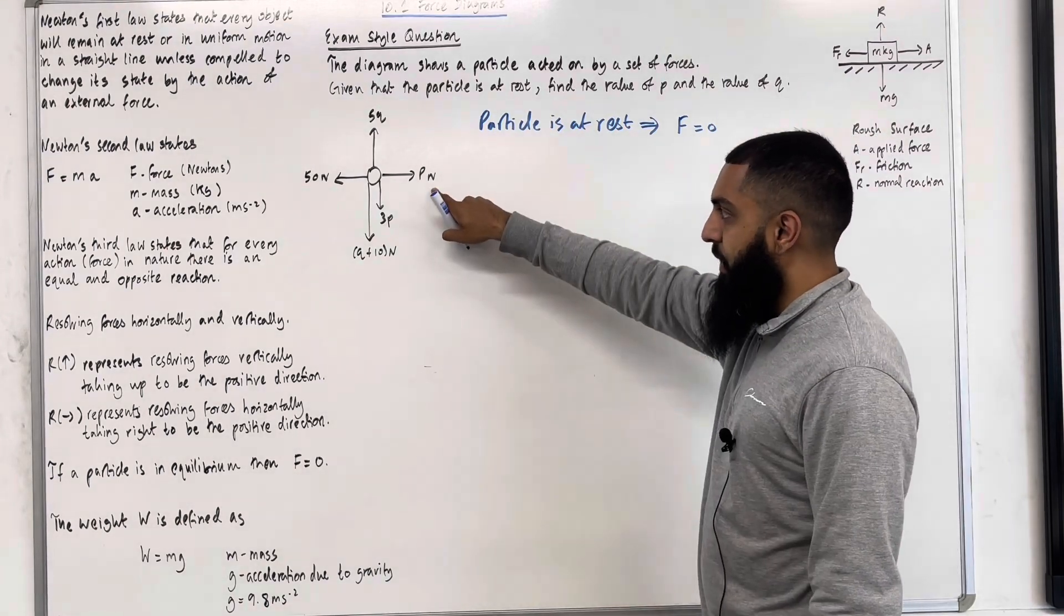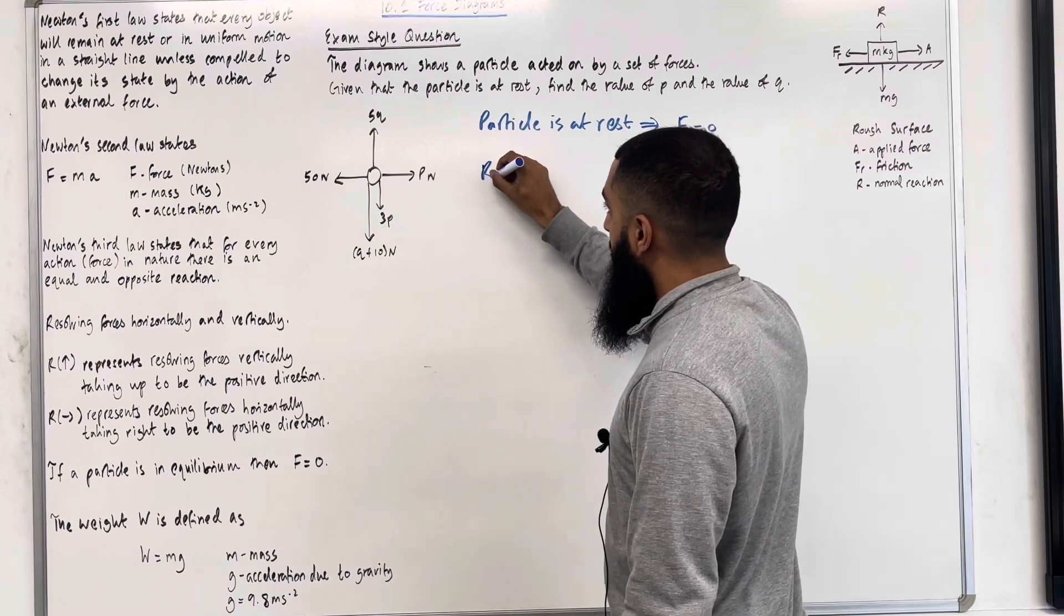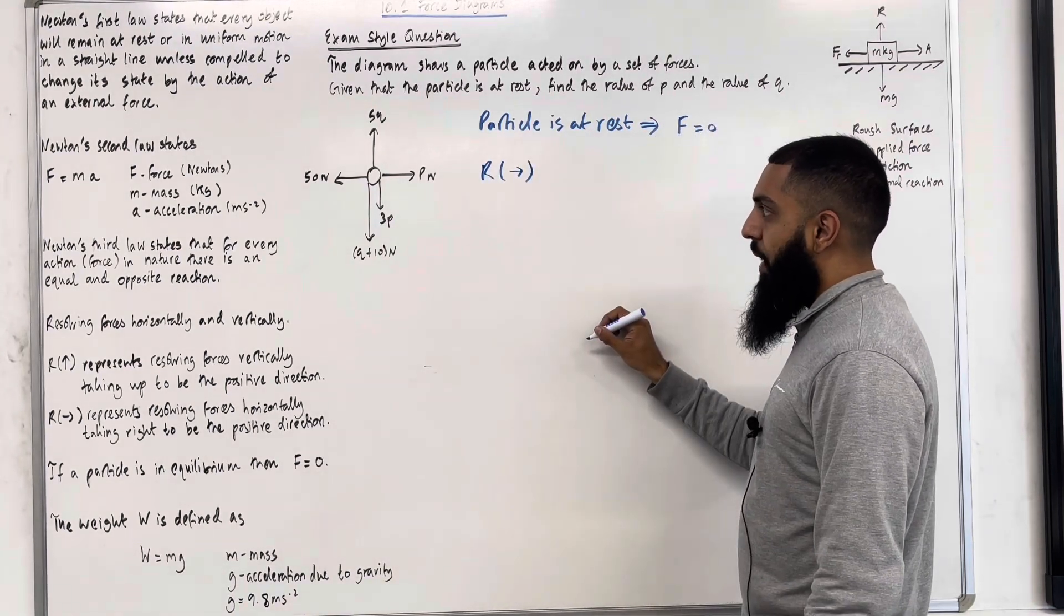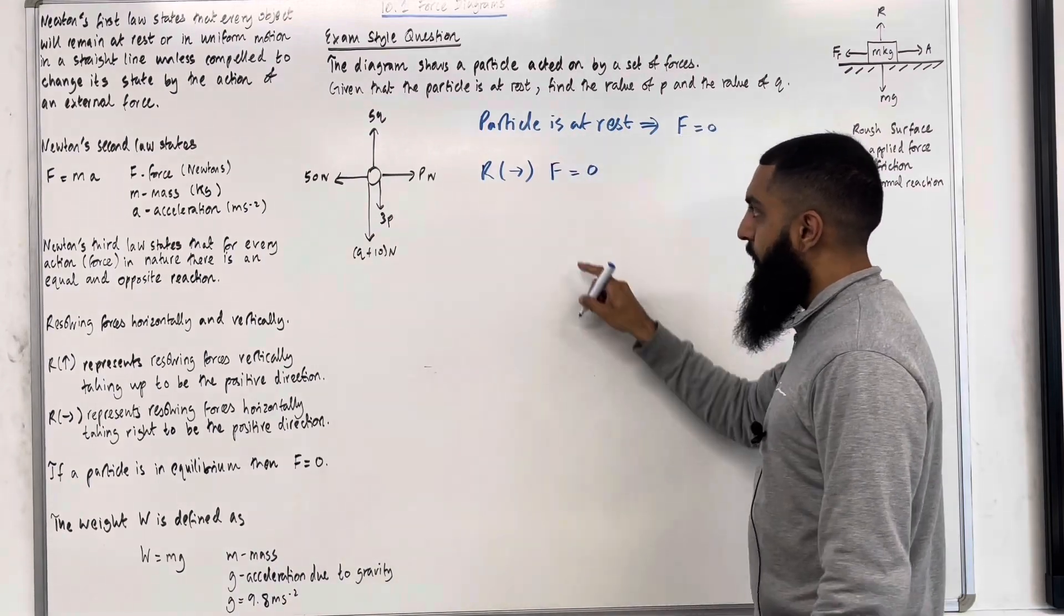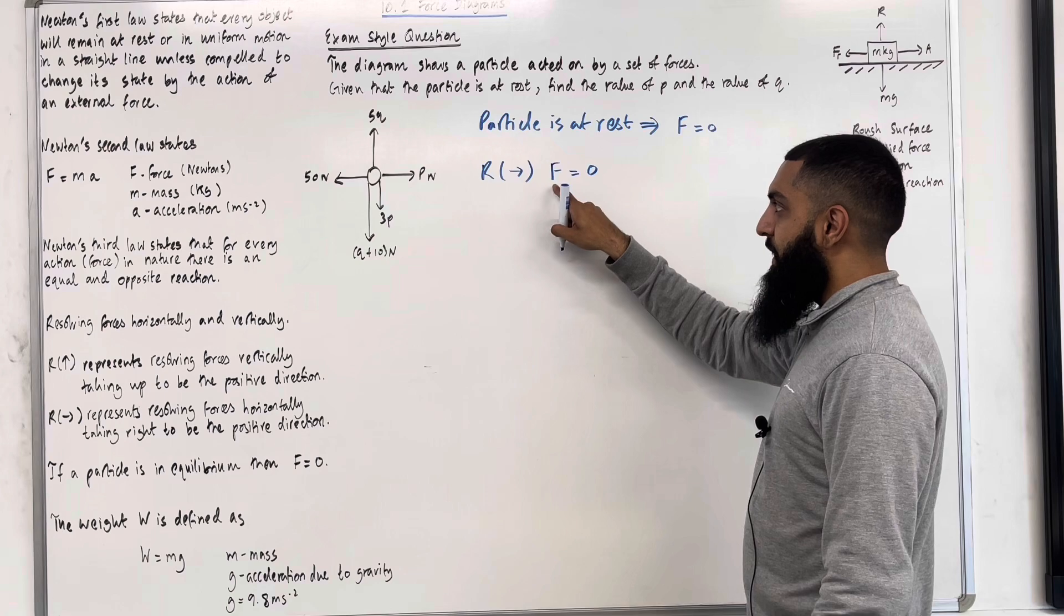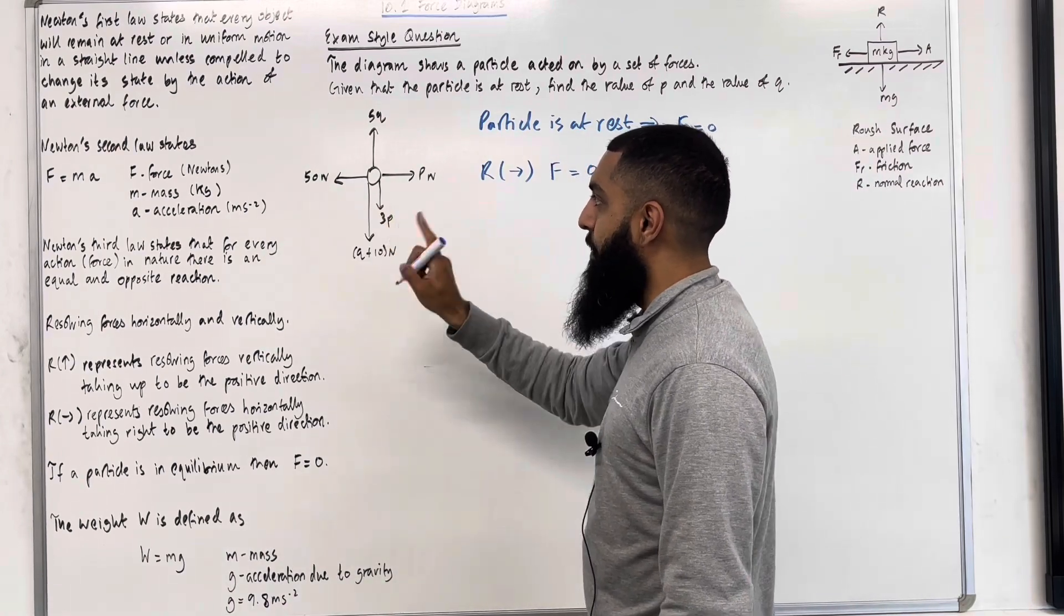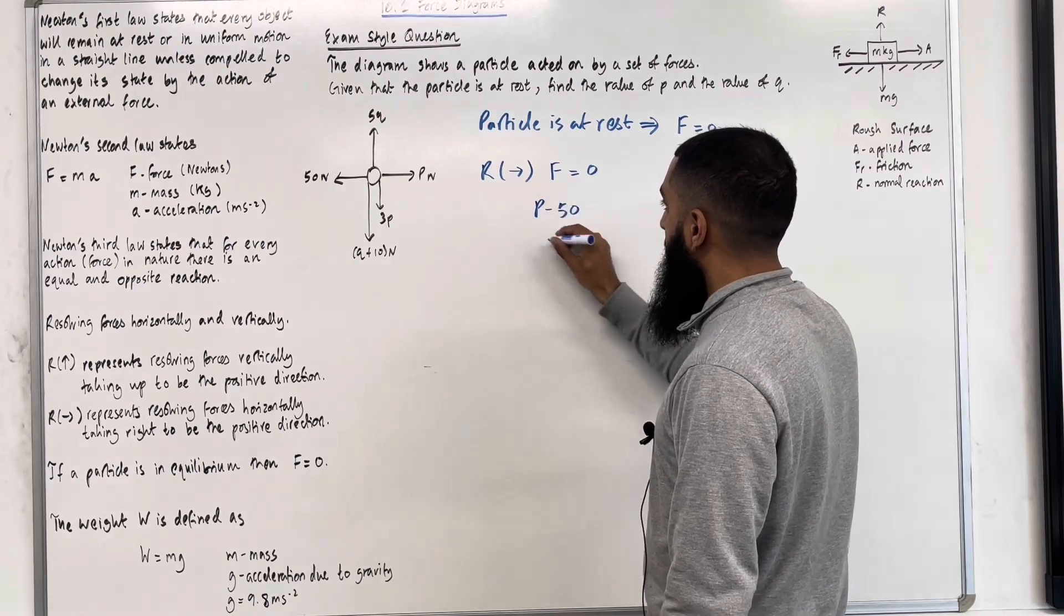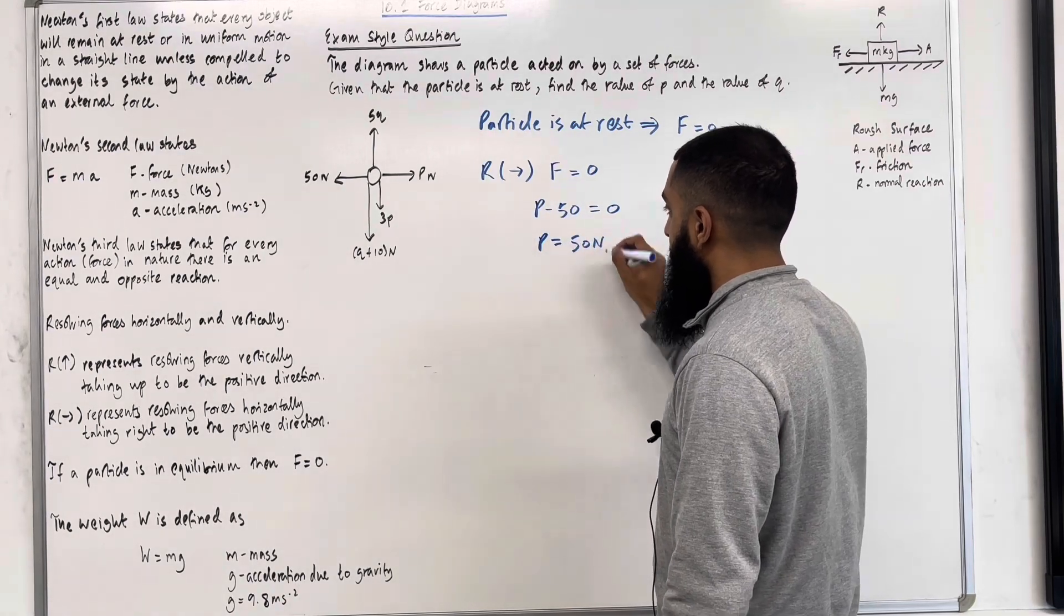Now to work out P, I'm going to resolve horizontally because P acts horizontally. Resolve horizontally taking right to be the positive direction. We know that horizontally the resultant force F is equal to zero. So what is the F? The F is P minus 50. 50 acts to the left, so it's minus 50. We have that F is P minus 50. This must equal zero. Hence P equals 50 newtons.